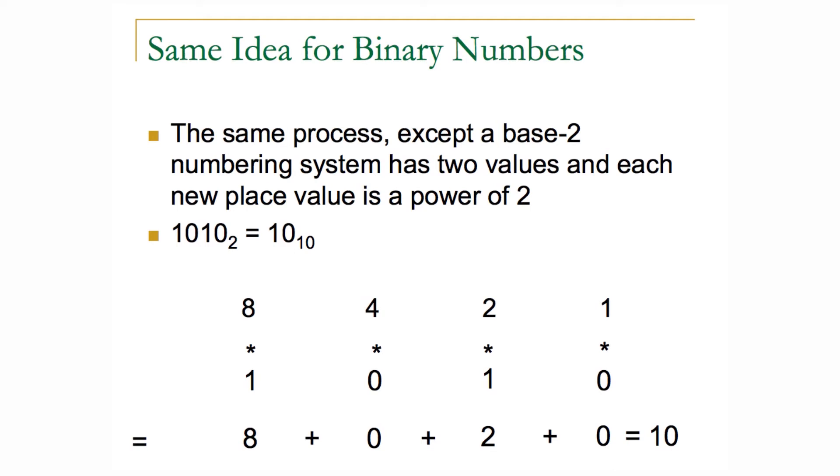So the bit pattern 1010 in binary is equal to the decimal number ten. We could compute this by lining up those powers of two as I just mentioned, and then aligning the bit pattern underneath it.